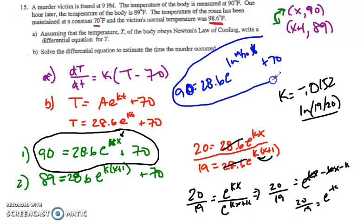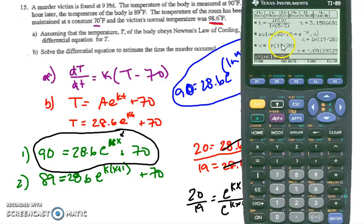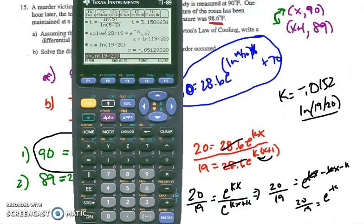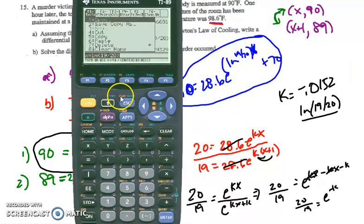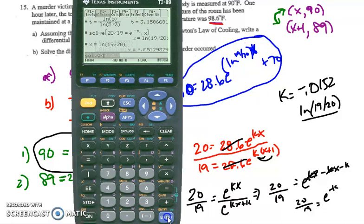And I now need to solve this in my solver for the x value, which will be effectively how many hours went by when we found this body. So let's bring the calculator in and we're going to do the solver again.